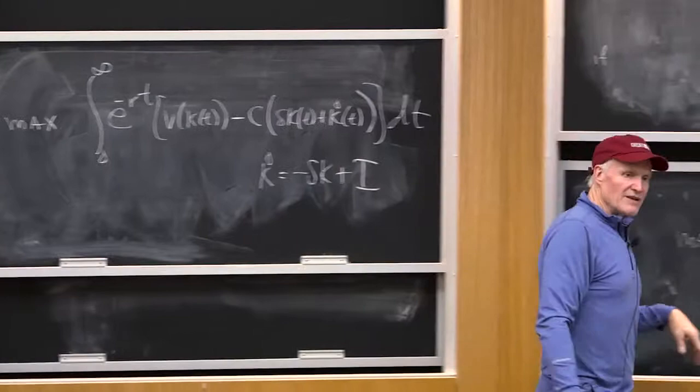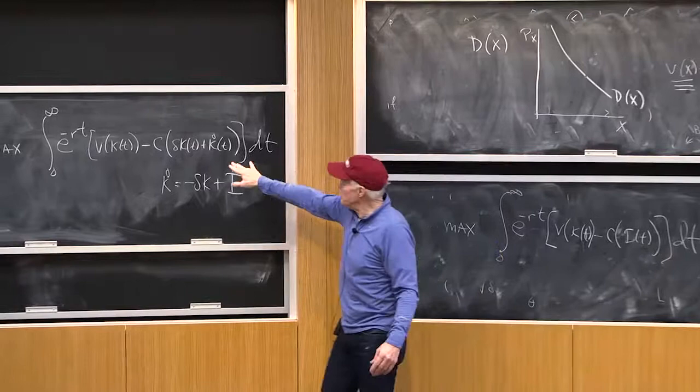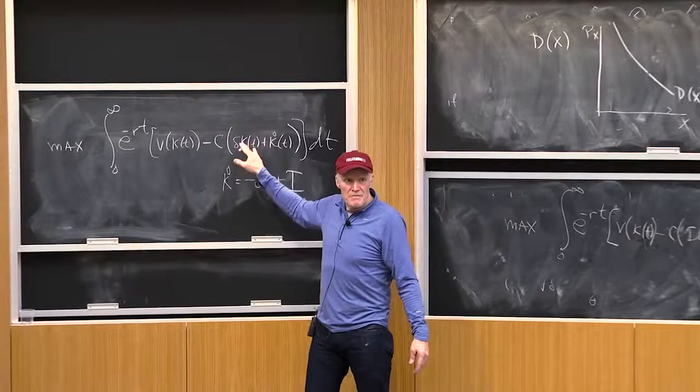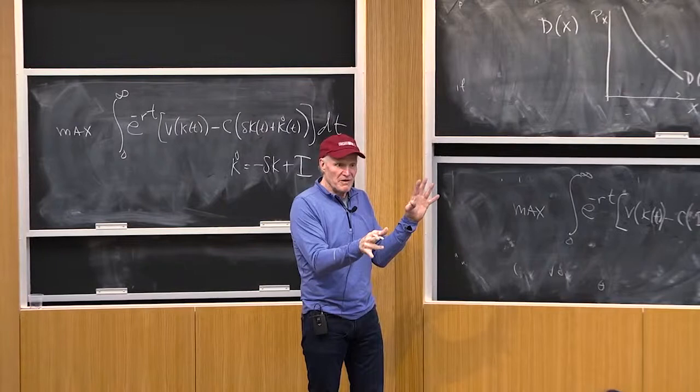So now let's look at what's the first order condition to this problem? Does anybody know? How do you maximize a function of k dot and k? Well, remember, the way to think about it is you can't think of k and k dot as independent choice variables, right? Because if you choose k dot, you've kind of chosen k.